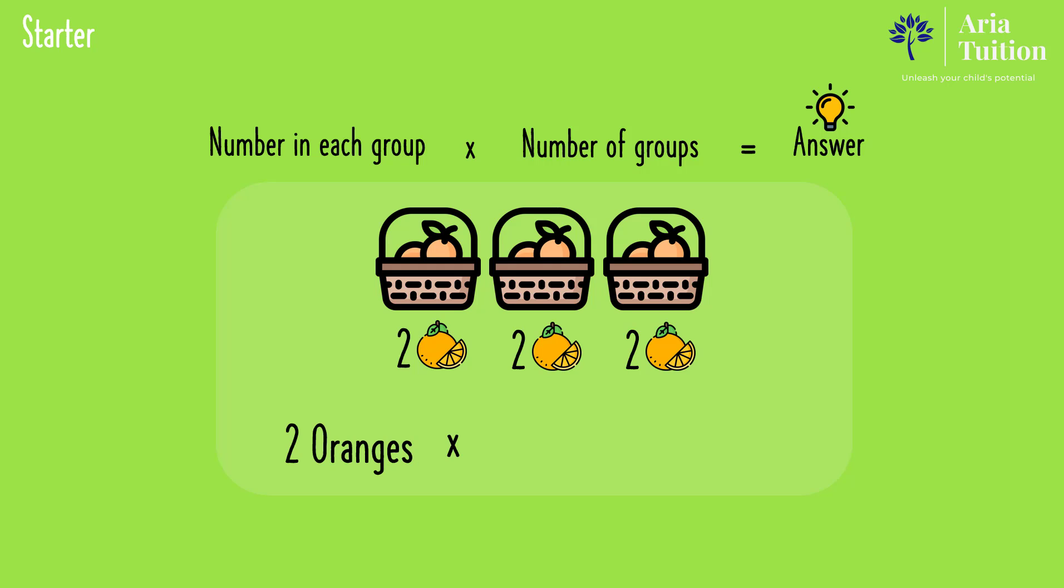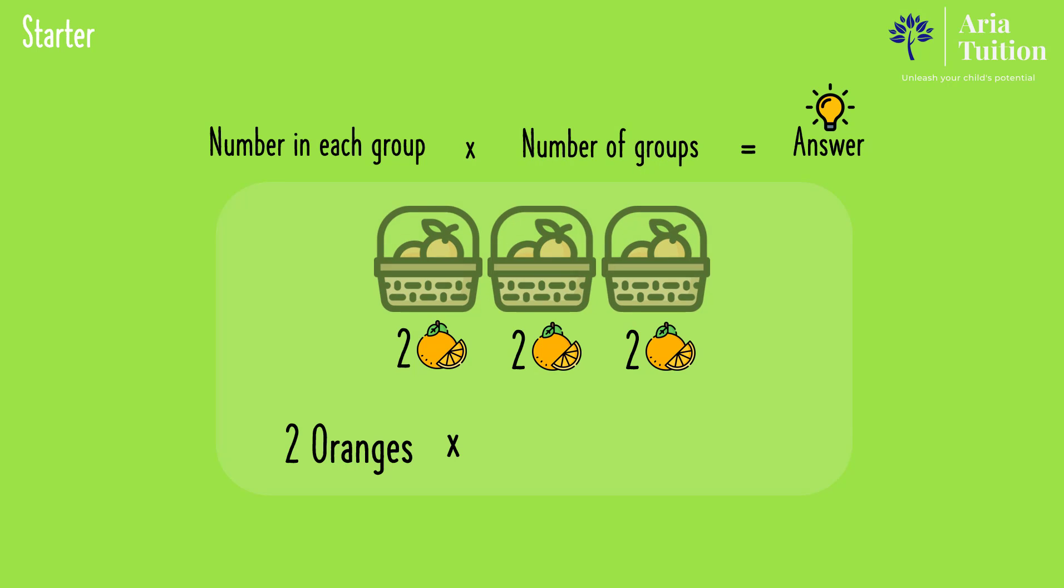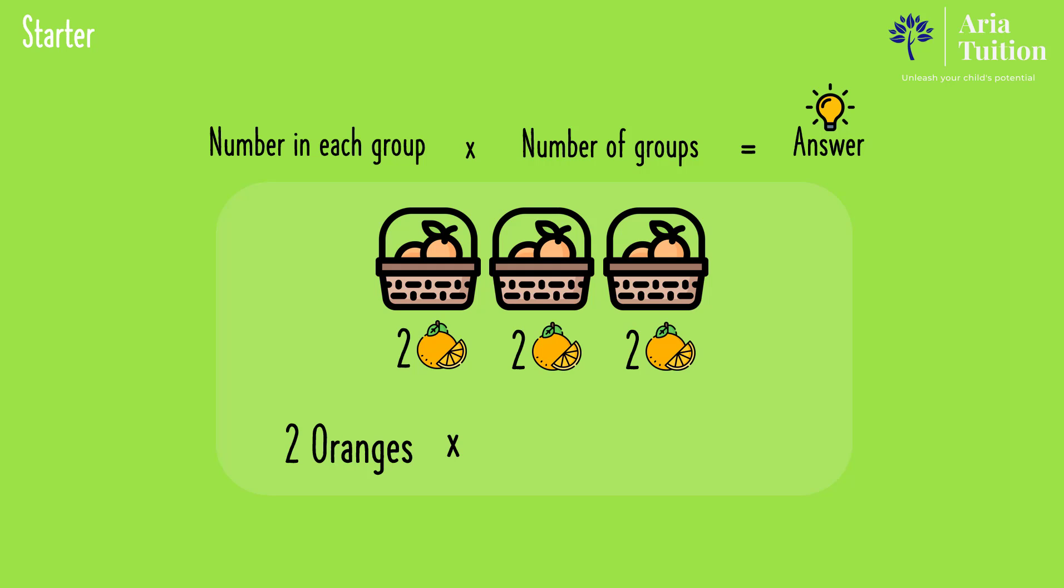This is multiplied by the number of groups which is three baskets. Multiplying the two oranges by the three baskets equals six oranges, therefore there are six oranges in total.